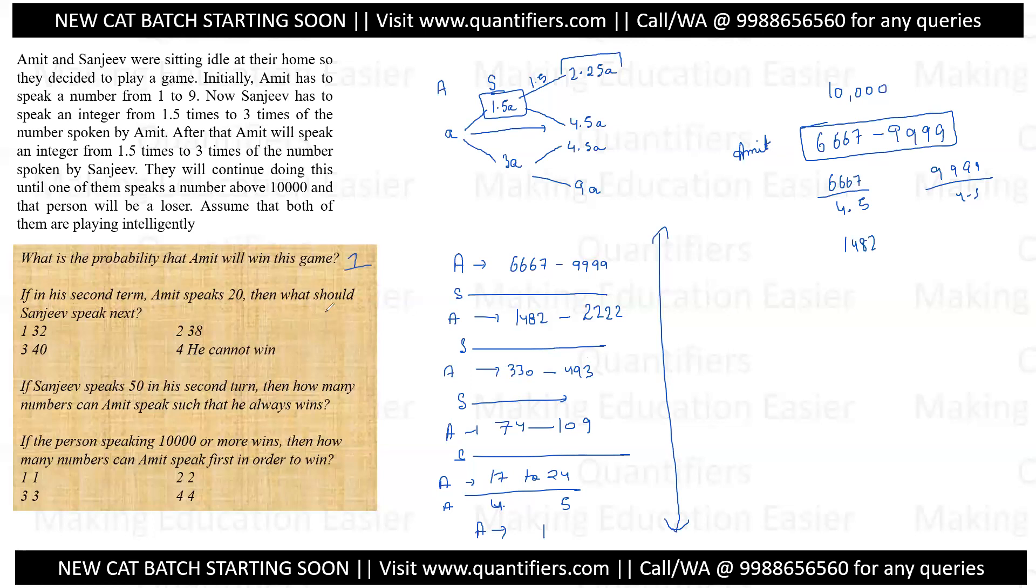If in the second turn Amit speaks 20, then what should Sanjeev speak next? See, Amit is already in the winning zone, so no matter what Sanjeev picks, he can never win. So the answer is he cannot win.